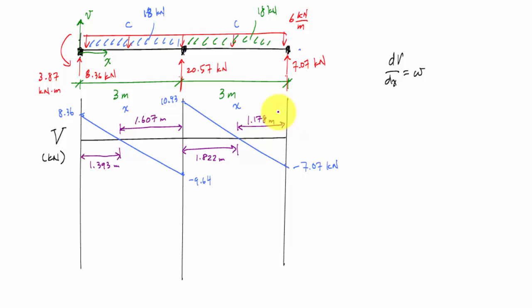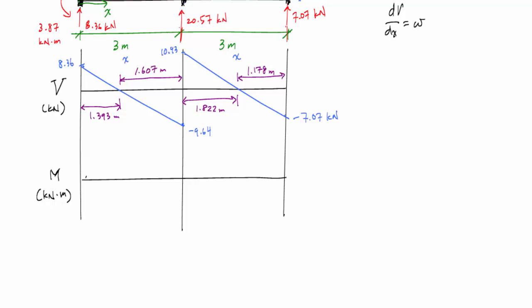Alright, and with that, now I can go ahead and draw my moment diagram. And here I am going to start at negative 3.87 because I have a concentrated moment on the left side, and it's generally pointing down. So boom, negative 3.87 kilonewton meters. This is linear, so I expect my moment diagram to be parabolic. I have a zero location here, so I'm expecting a peak at these locations right here.